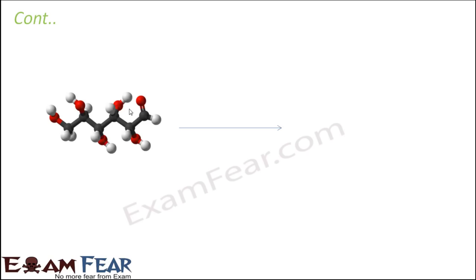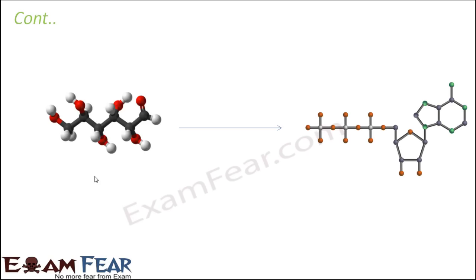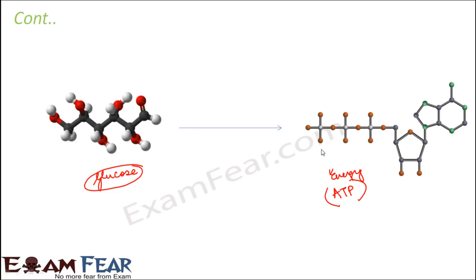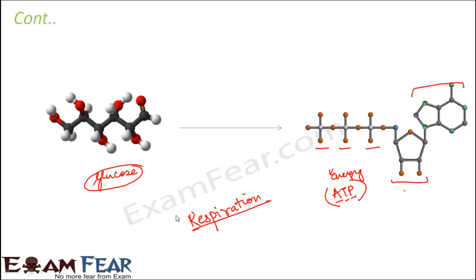So this is the conversion of glucose into energy in the form of ATP molecules. An ATP molecule — adenosine triphosphate — has three phosphate groups, an adenosine group, and a ribose sugar, constituting adenosine triphosphate. It is the energy currency of the cell. This conversion is known as respiration. In this lesson, we are going to see how this conversion takes place — how glucose is converted into energy in the form of ATP molecules.